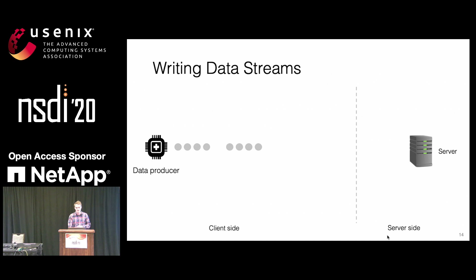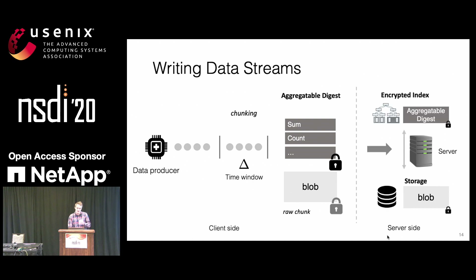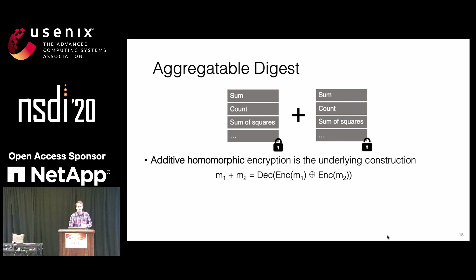In TimeCrypt, we leverage the characteristics of time series data and batch data on the client side in fixed time windows. The window size remains constant throughout the stream. Data within each window is put into a raw data chunk encrypted with standard symmetric encryption. On top of that, we add a so-called aggregatable digest — summaries about the underlying raw data. The server computes low-latency queries on top of this aggregatable digest, while the raw data remains in storage and is only accessed when the client requests raw data access.